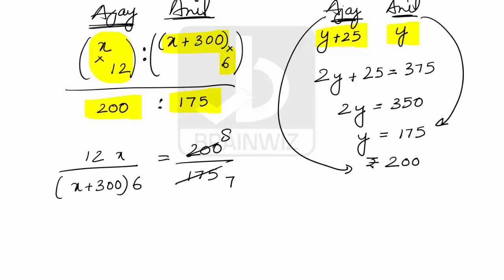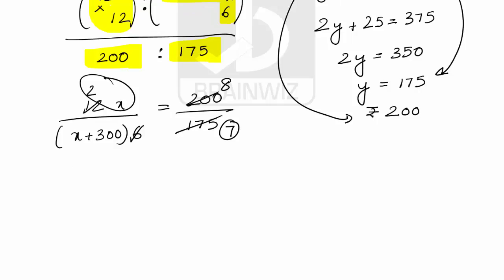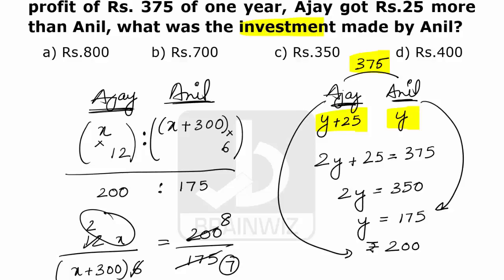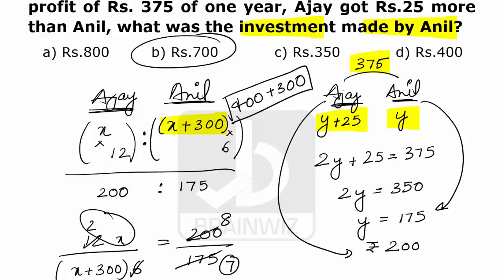Cross-multiplying: 7 times 12X equals 8 times 6(X plus 300), giving 84X equals 48X plus 2400. So 6X equals 2400, which means X equals 400. Since Anil's investment is X plus 300, that is 400 plus 300 equals 700 rupees. Option B is the correct answer.